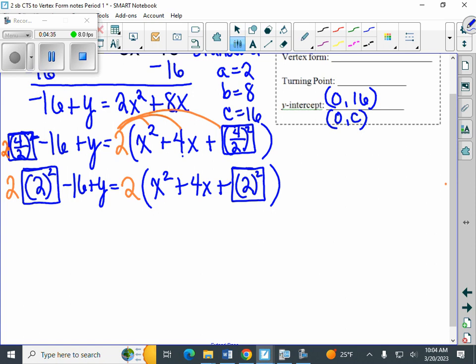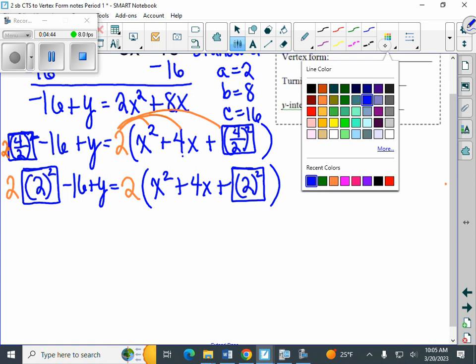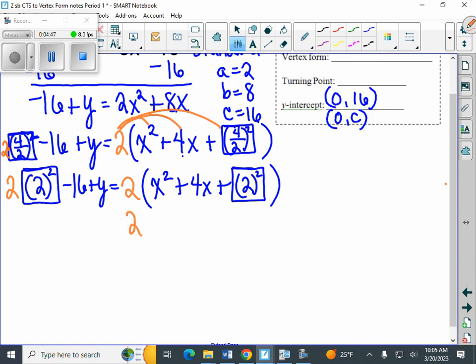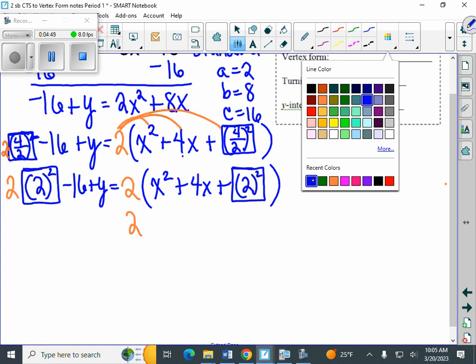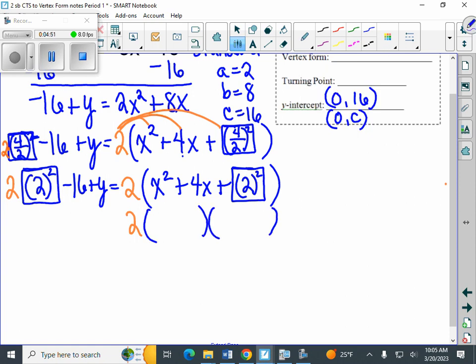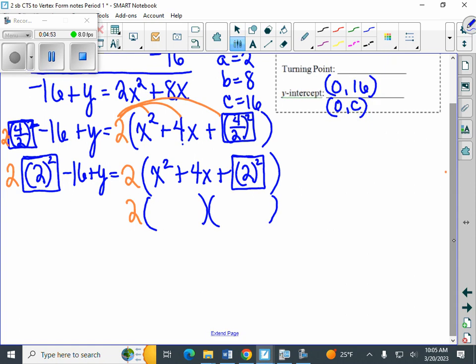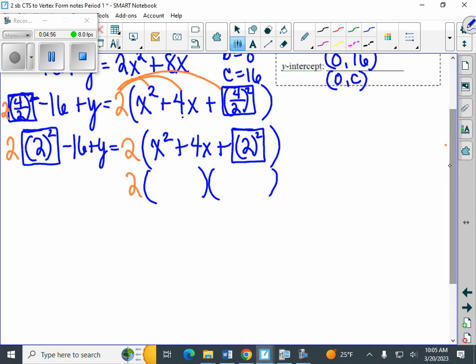And now we're to the factor part. And what we've done is, we've created a perfect square trinomial. And what that means for us, is that means that, when we write down our parentheses, we're going to have the same values in each of those parentheses. And the way we can come up with this, is that x squared is x times x. And 2 squared is 2 times 2.